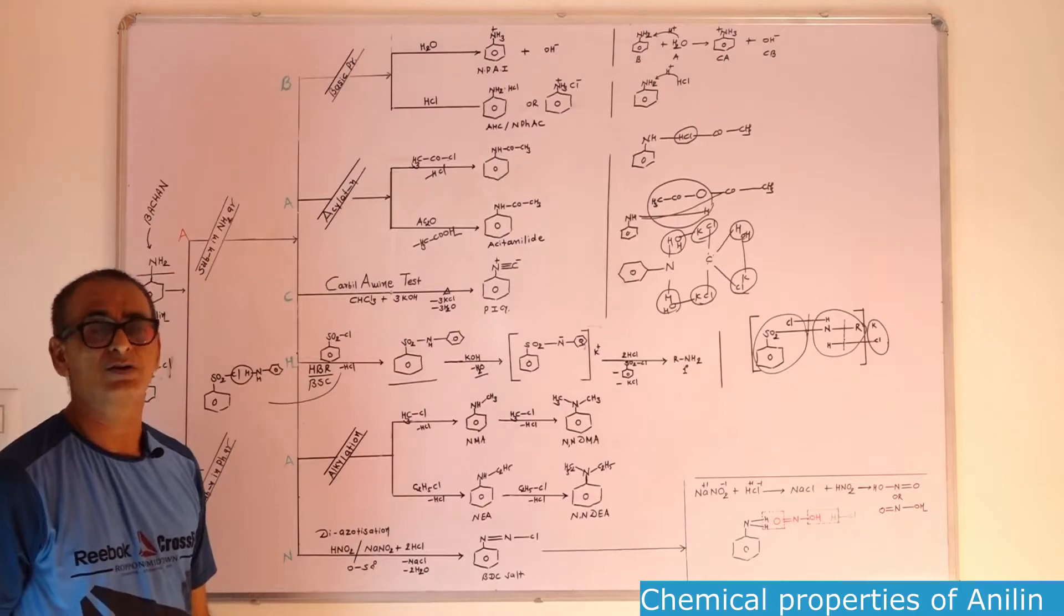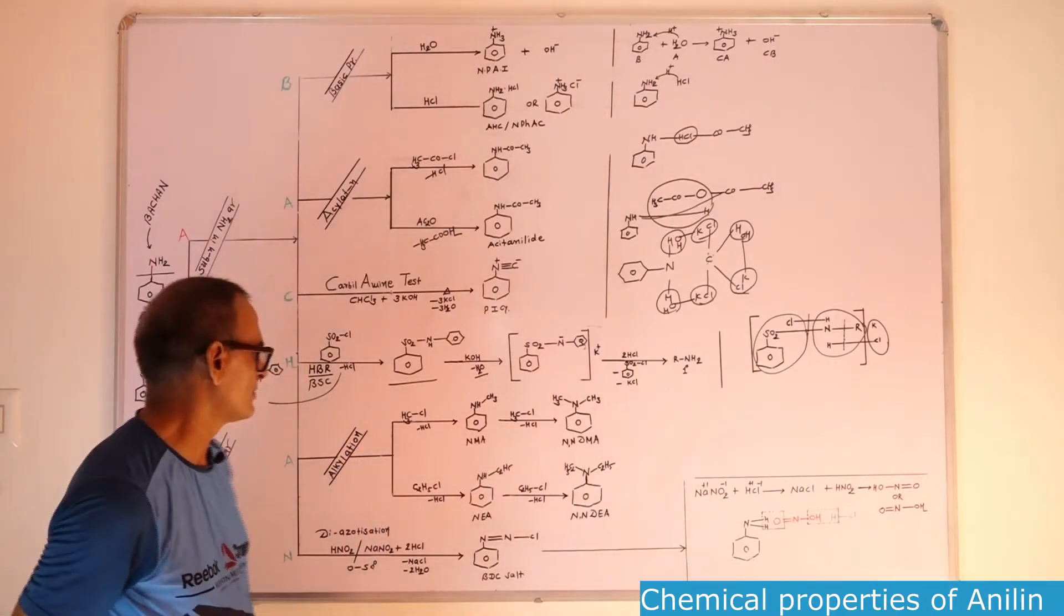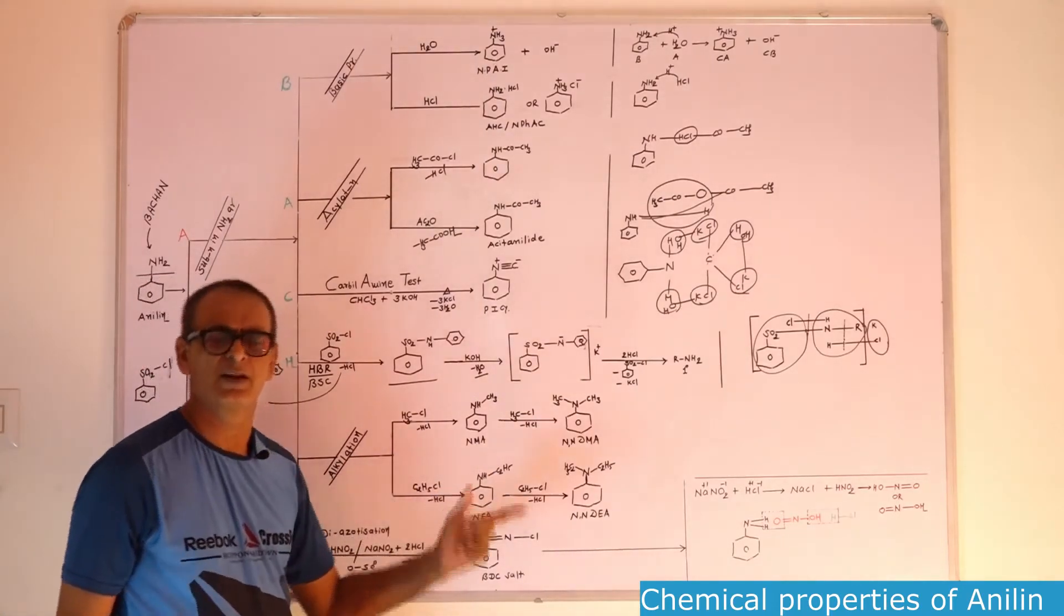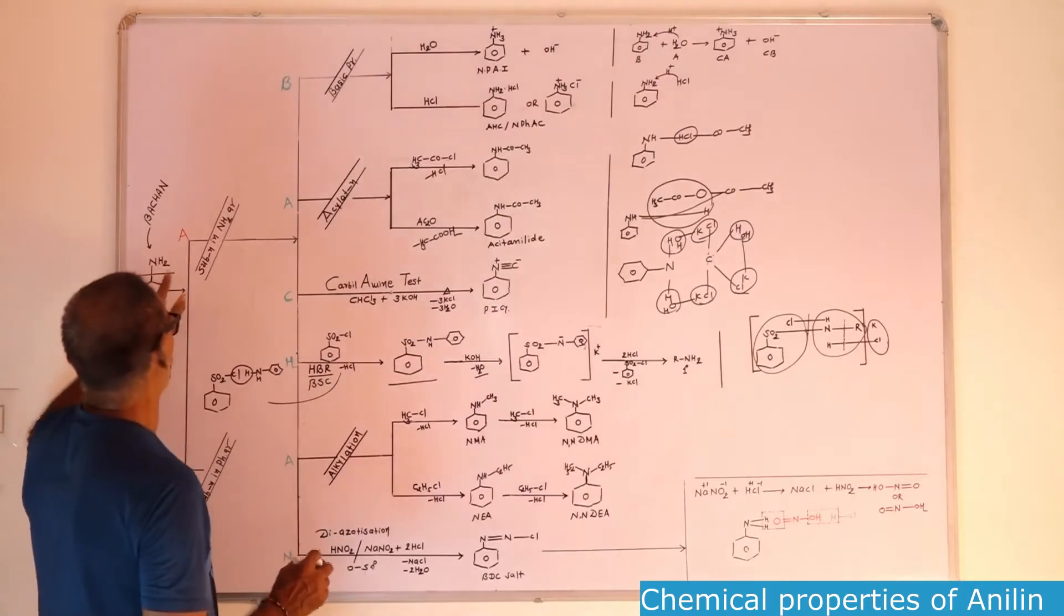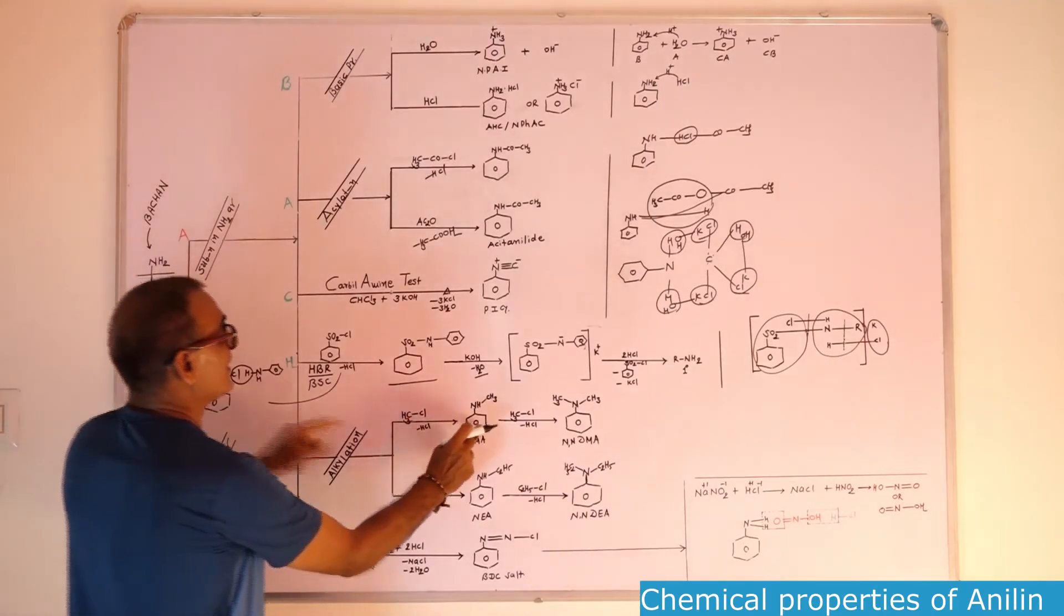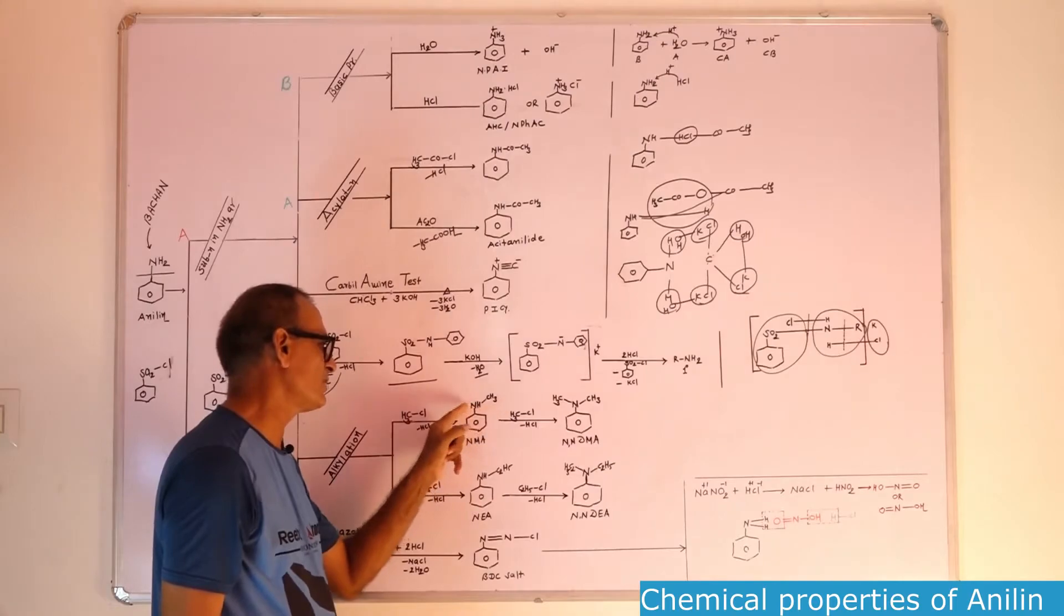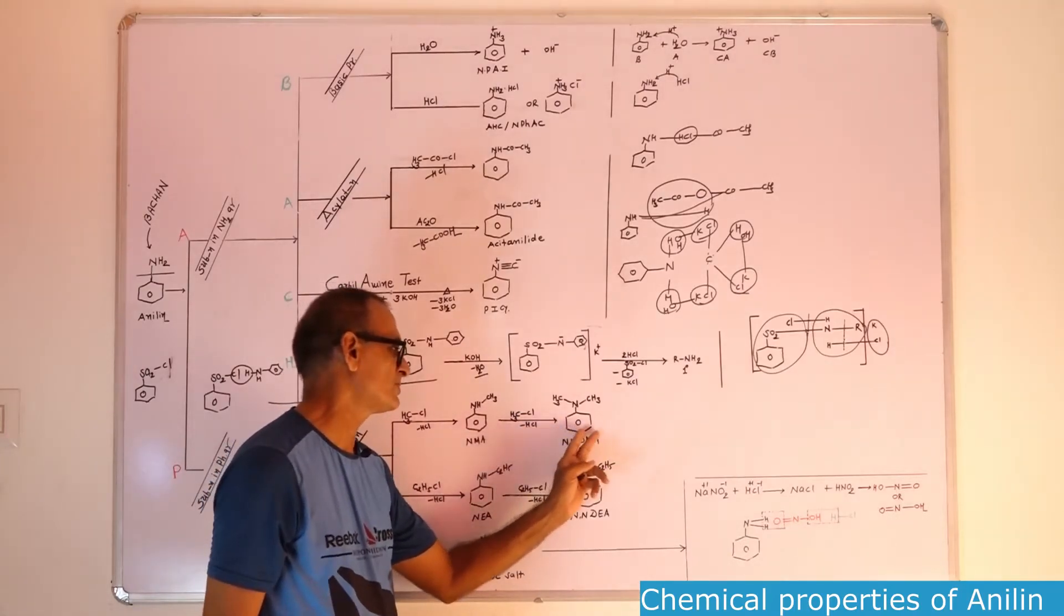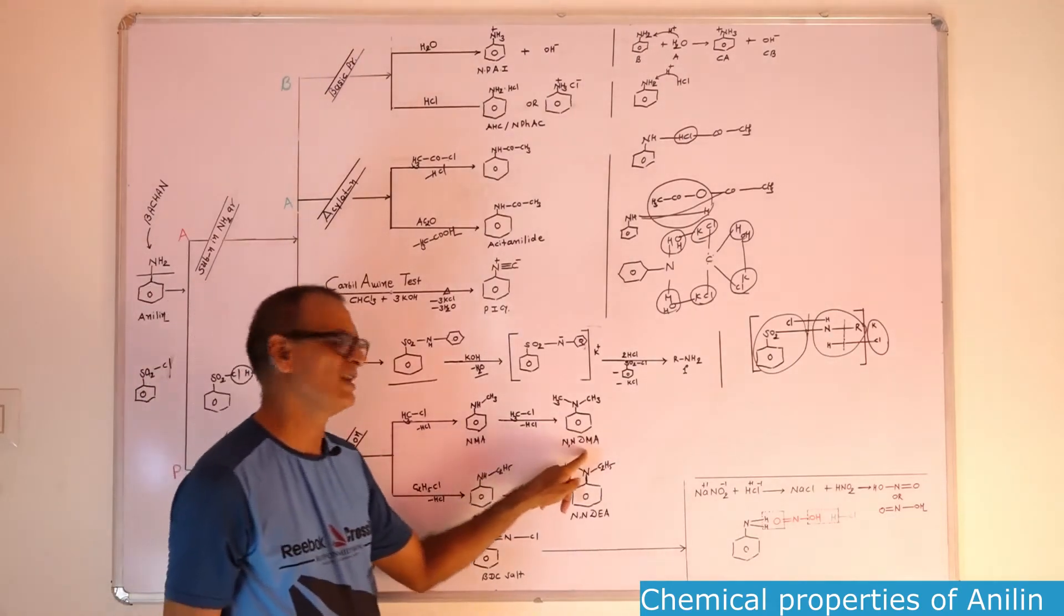Then alkylation. Introduction of alkyl group to nitrogen atom is known as alkylation. During the alkylation, you can introduce methyl group then it is known as methylation, ethyl group then ethylation. Alkyl chloride is the reagent for alkylation. Hydrogen of aniline and Cl of methyl chloride, HCl will remove as a byproduct and benzene having NHCH3. During second reaction, second hydrogen attached with nitrogen will react with the Cl and HCl will be removed as a byproduct. This is our product, tertiary amine. This name of this compound is N-methyl aniline. This one is N,N-dimethyl aniline.